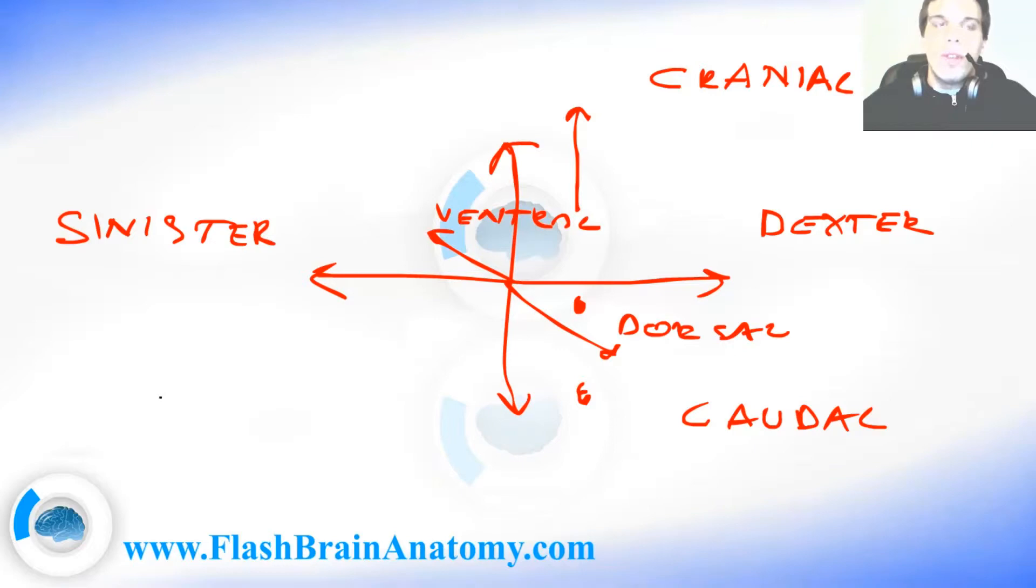There are also a few things I would like to point out because we don't want to confuse the terms. For example, N stands for nerve and NCL stands for nucleus. So if you see the N, it doesn't mean nucleus but nerve. It's very important.